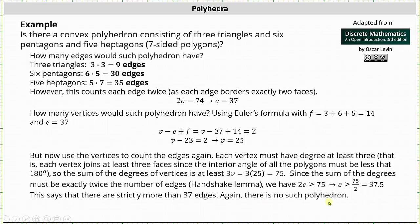And therefore there is no such polyhedron where the faces are 3 triangles, 6 pentagons, and 5 heptagons. I hope you found this helpful.